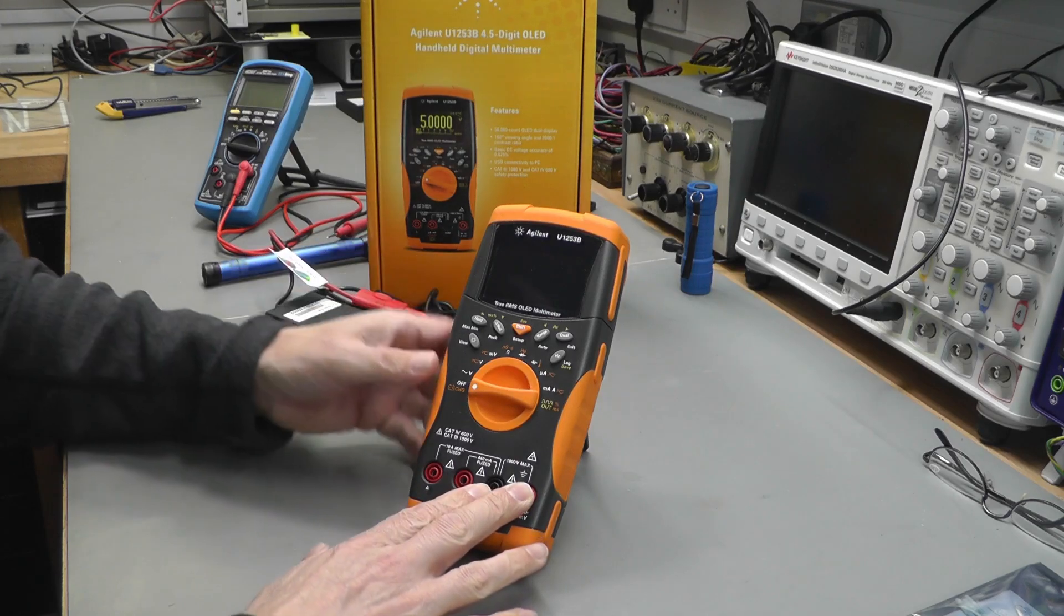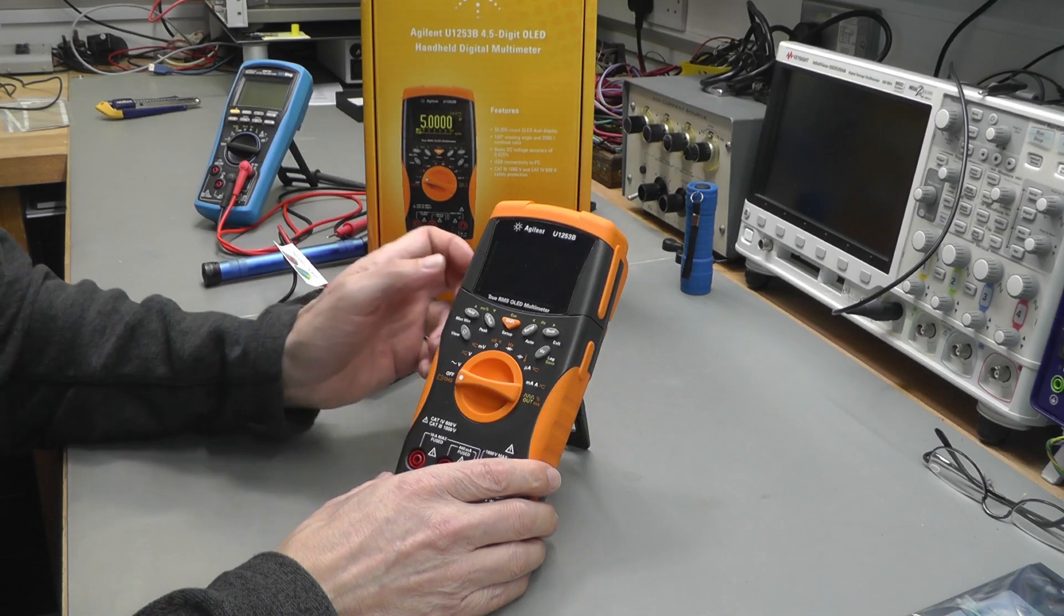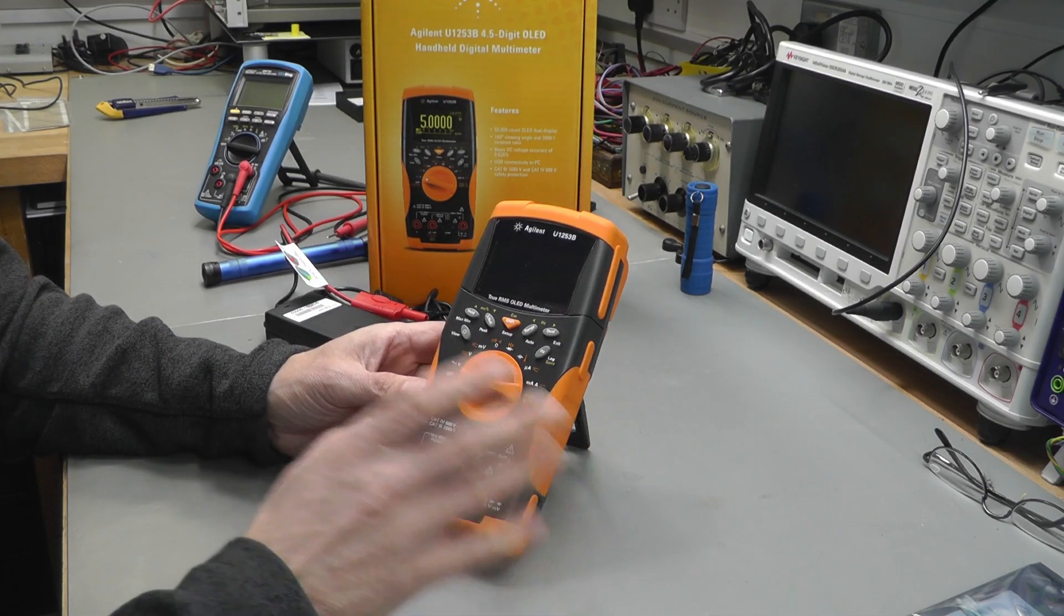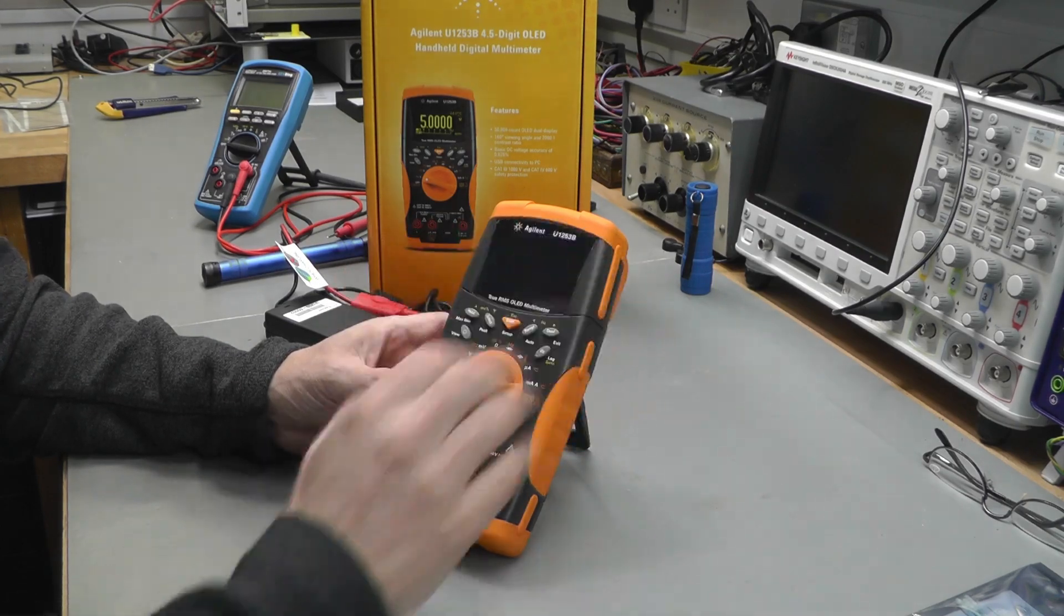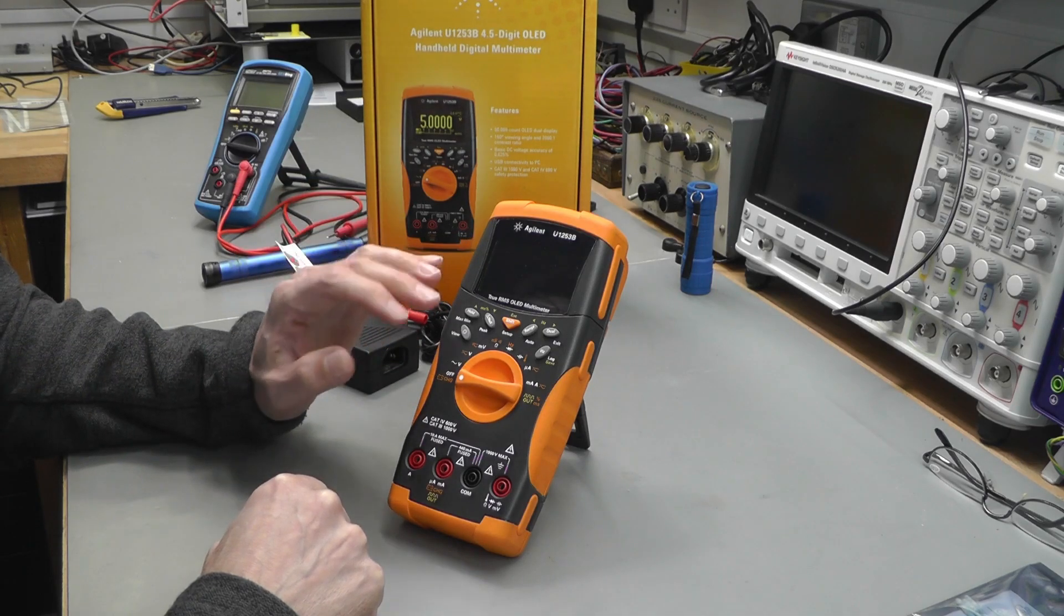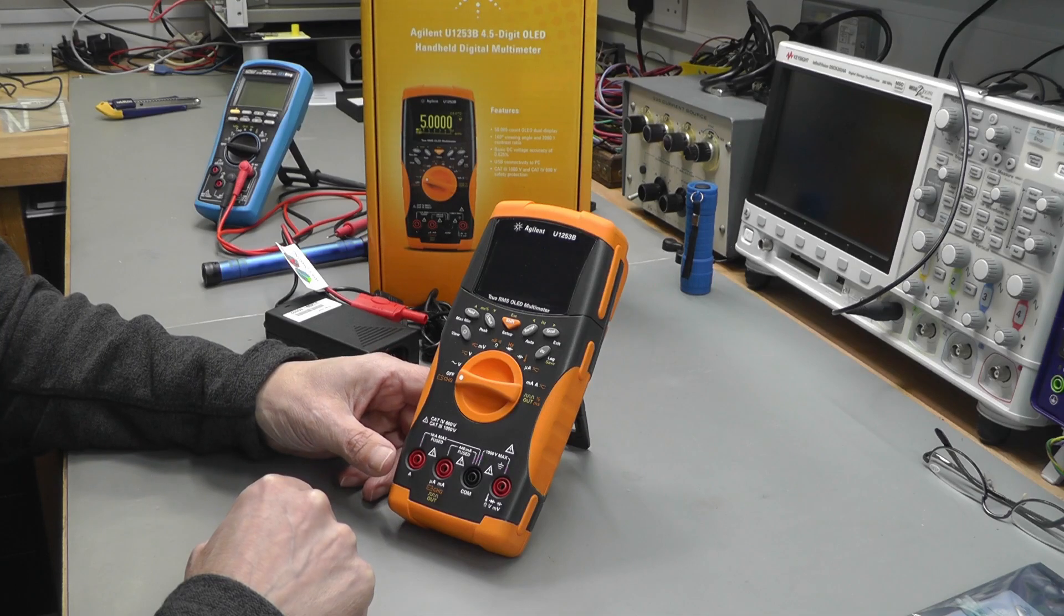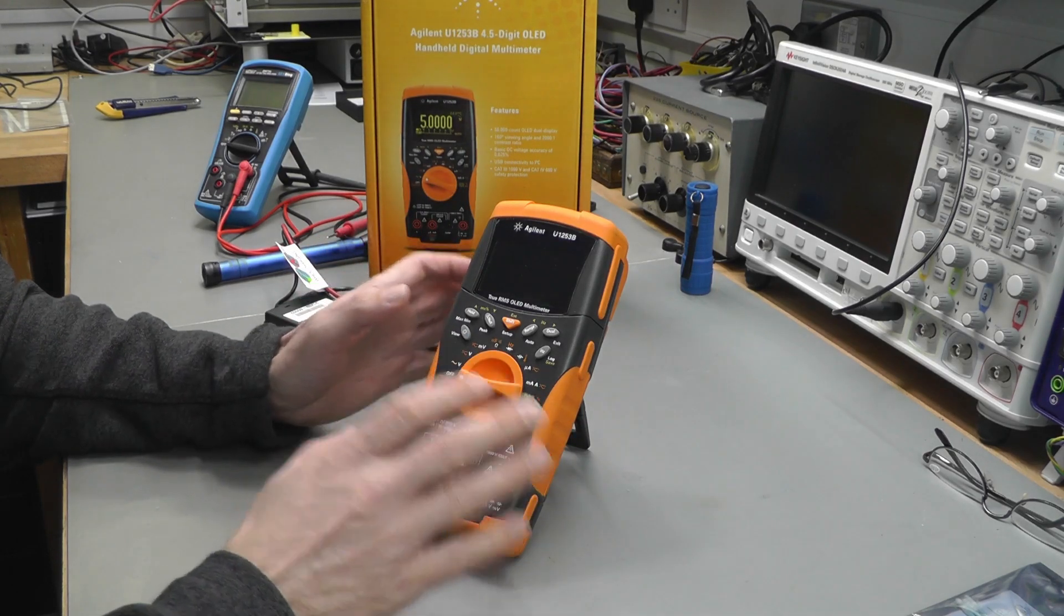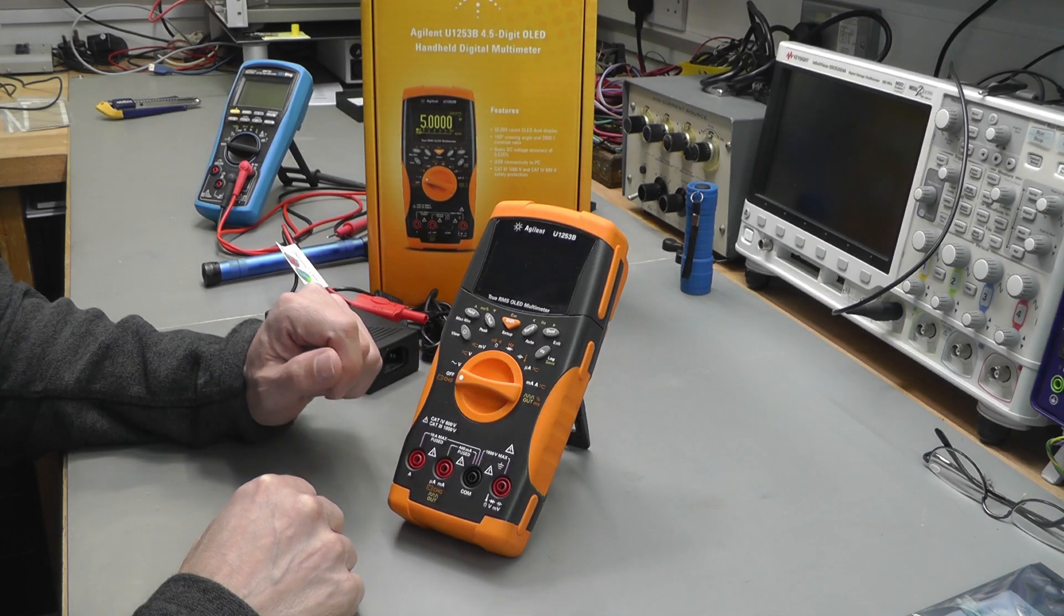You can charge it via the sockets on the front here, but it is faulty. I believe it's suffering from the classic case of OLED failure. These OLED multimeters have a history of failure where the display gets dimmer and dimmer to the point where it's completely unreadable. It does have a charged battery inside.